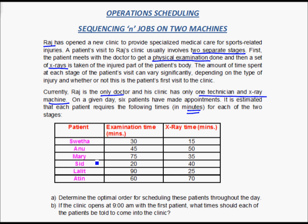The six patients who have made appointments are Shweta, Anu, Mary, Sid, Lalith, and Atin. The clinic has already determined the time each patient will need for examination as well as x-ray. For example, Shweta needs 30 minutes for the physical examination and 15 minutes for the x-ray. Anu needs 45 minutes for the physical examination and 15 minutes for the x-ray, and so on.